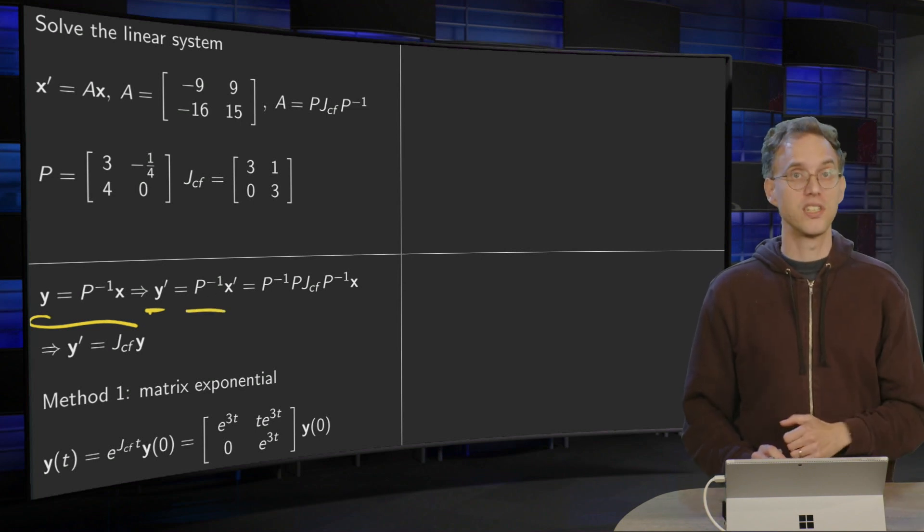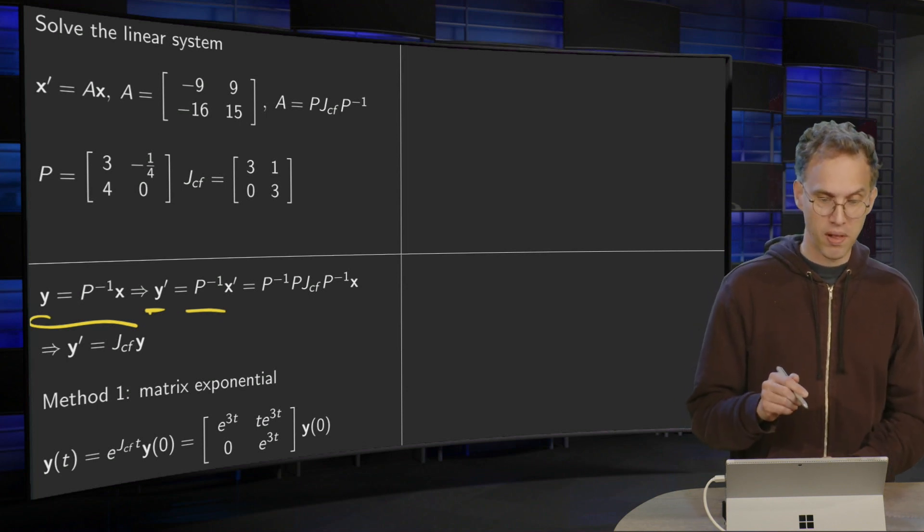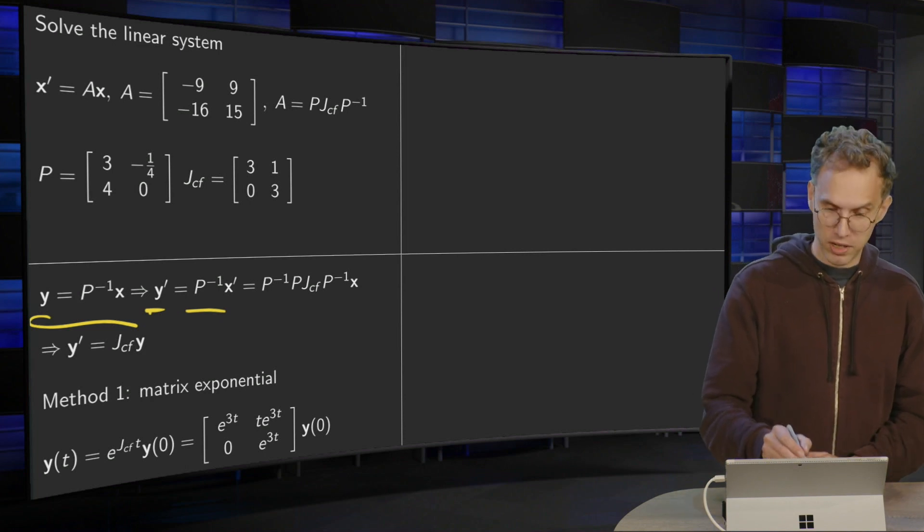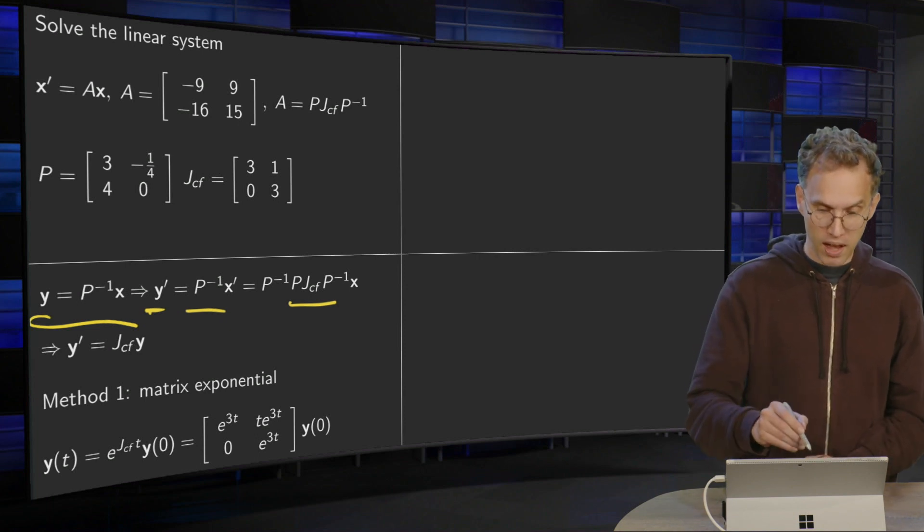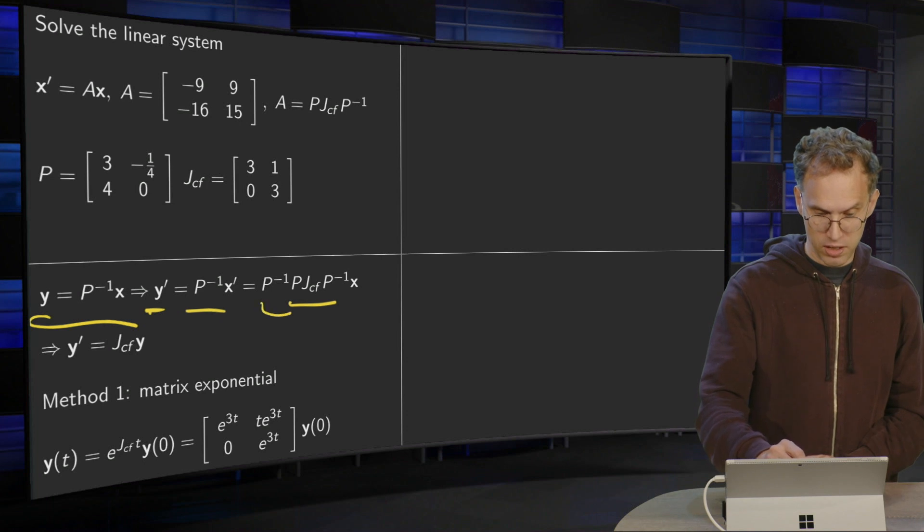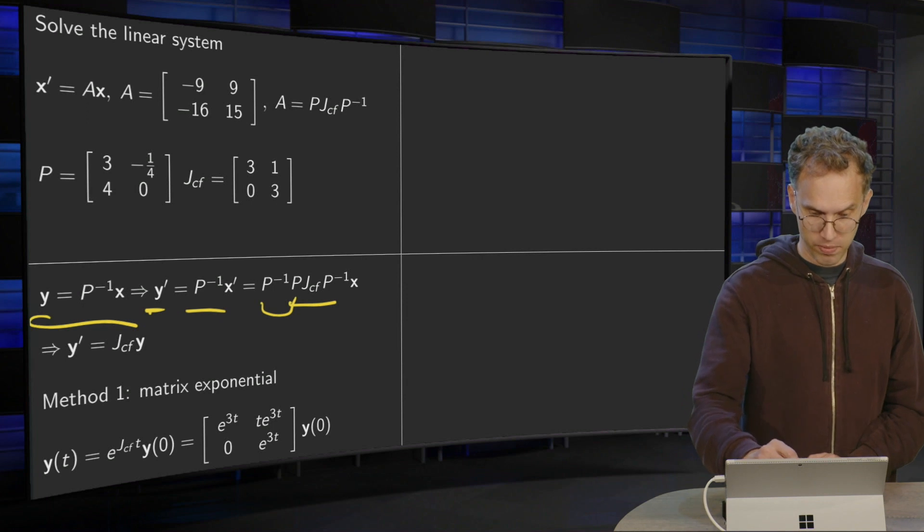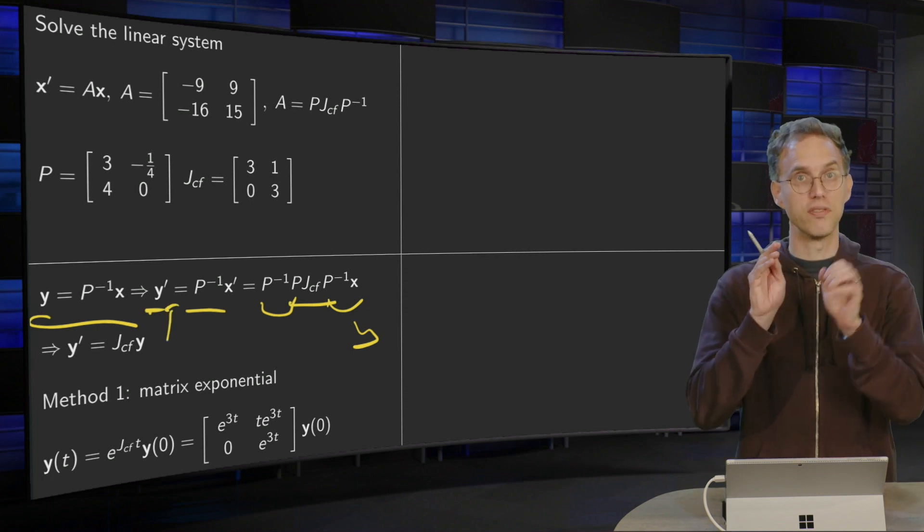P is a constant matrix, so you don't have to take the derivative. And then we know that x' equals A times x. So here we have an A, P times JCF times P inverse times x. And you see these two cancel out. P inverse times x is again a y. Here we have a y. So what we end up with is y' equals JCF times y.